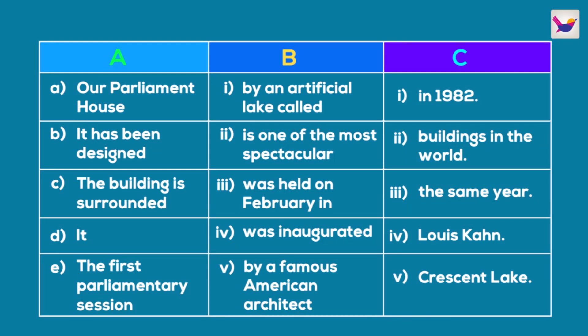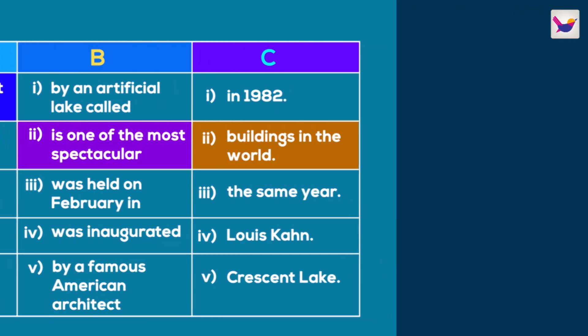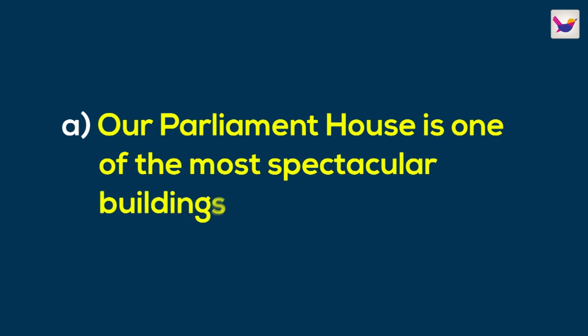The table is called Parliament House. In column A, the first sentence is 'Our Parliament House' — this is our subject. We need to find the verb or auxiliary verb. In column B, there is an option for the auxiliary verb: 'is one of the most spectacular.' Column C is called 'Buildings in the World.' So the complete sentence is: Our Parliament House is one of the most spectacular buildings in the world.